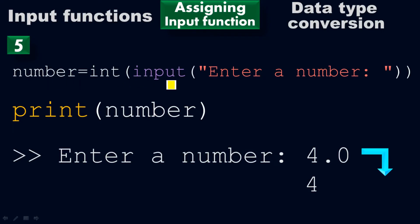Number equals int of input of 'Enter a number' with a space. When you print number and run the program, you will get 'Enter a number'. Now you need to put the float number. 4.0 is the floating point number, it is not an integer.